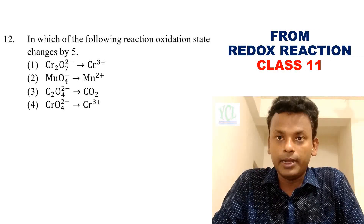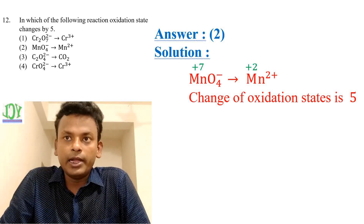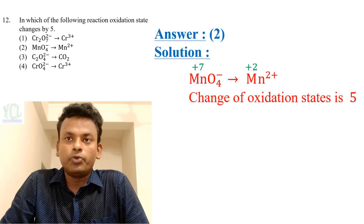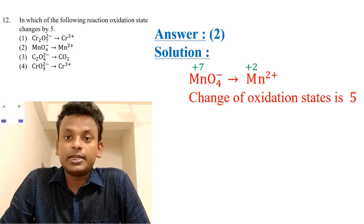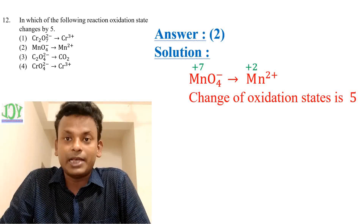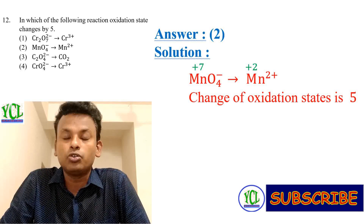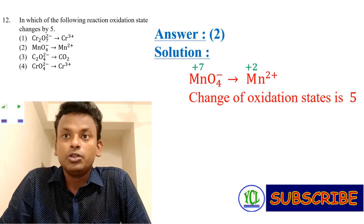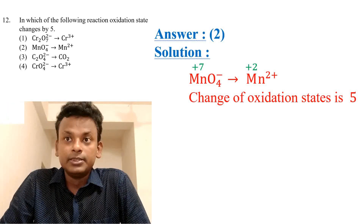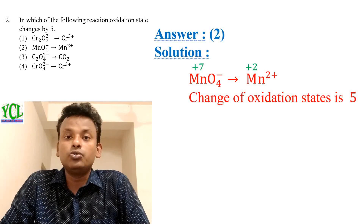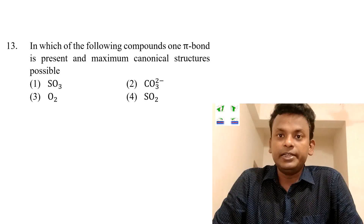The answer is option 2. In MnO4⁻ → Mn²⁺, the oxidation number of Mn changes from +7 in MnO4⁻ to +2 in Mn²⁺, so the change is 5. Therefore the oxidation state changes by 5 and option 2 is the correct answer. Next, question 13.